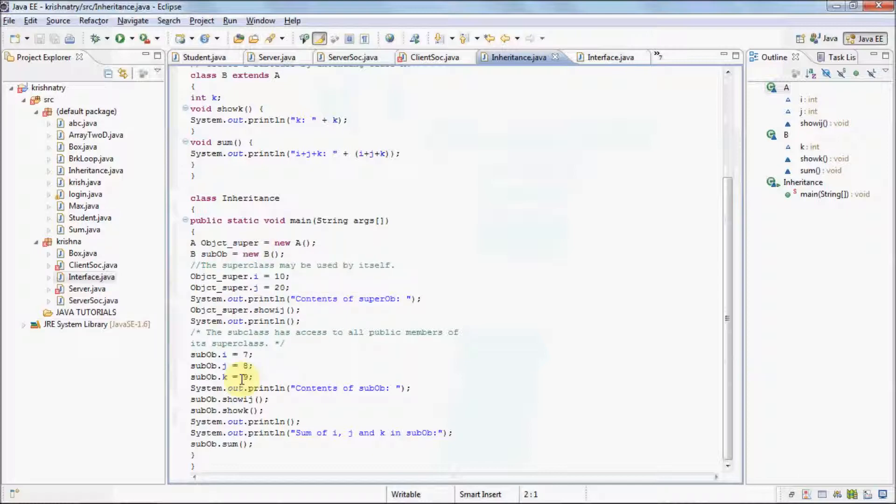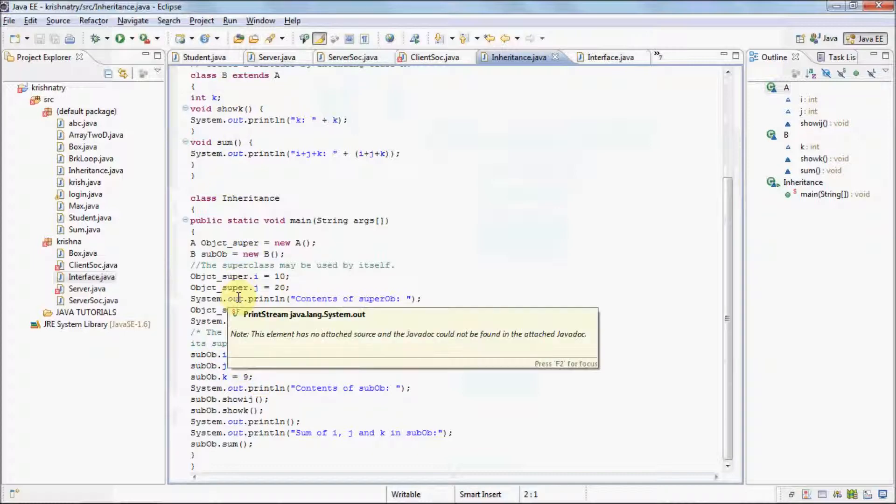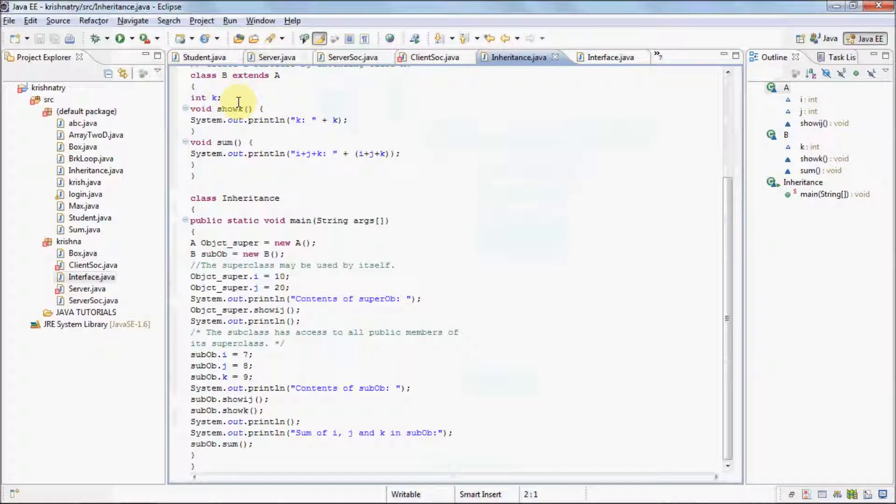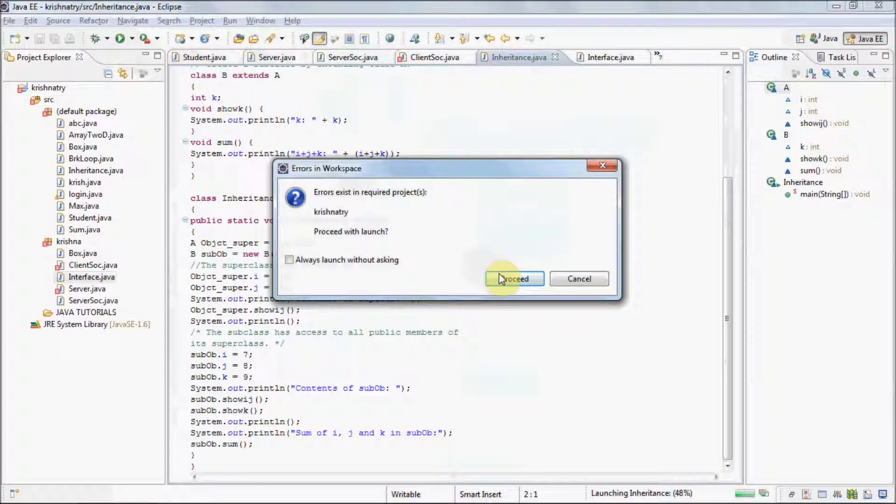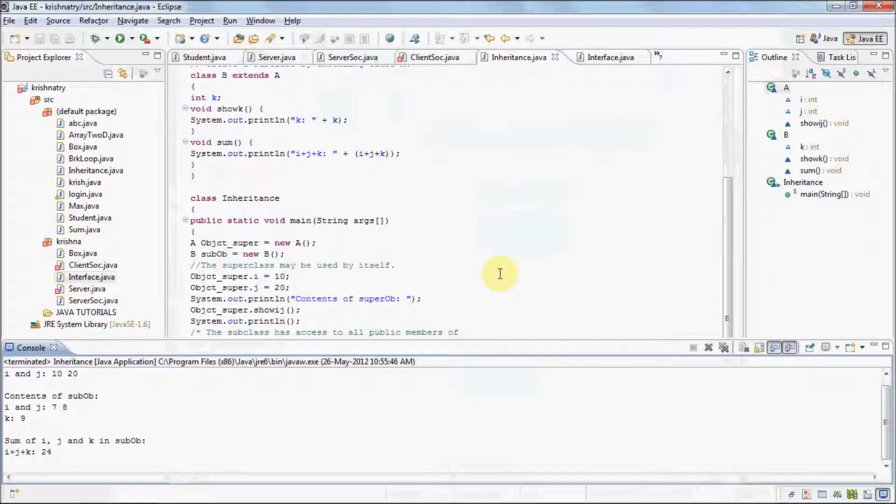Similarly, I can see that i j k of class B is assigned value 7 8 9. But you must notice i and j are not in class B. But as we have extended class A into class B, i and j are now contained in class B. Now let us run this program. You can see that contents of subclass object are i j and k: 7, 8, and 9. That is all three values are contained in class B.